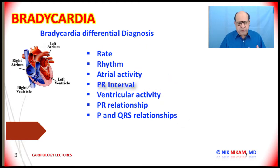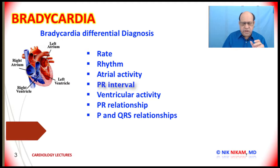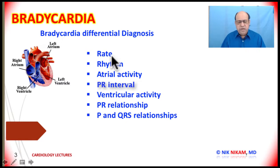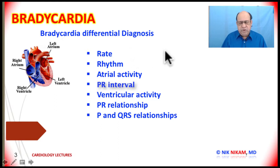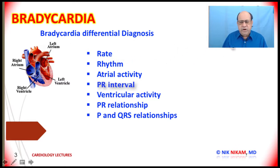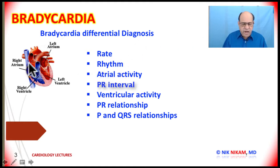Before we come to a conclusion as to what type of bradycardia we are dealing with, it is very important to systematically analyze the electrocardiogram or rhythm strip so that we understand the relationship between the atria and the ventricles. First, we need to determine the rate — for sinus bradycardia, the heart rate must be below 60 beats per minute. Second, we determine the RR interval to see if they are regular or irregular. Next, we look at the atrial activity in the electrocardiogram.